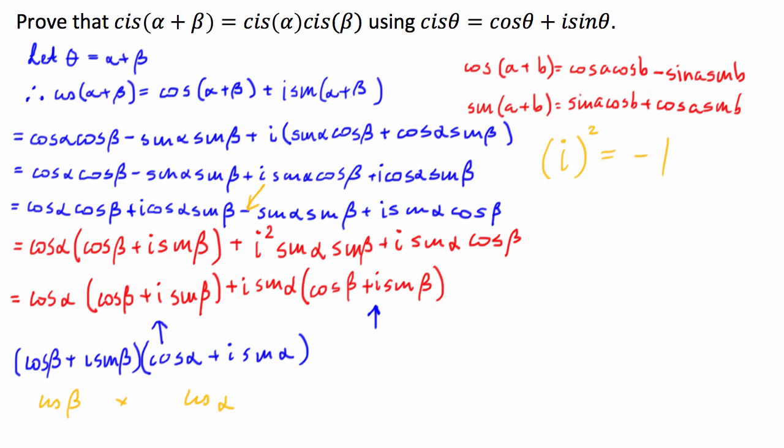We can make it look like the one in our question: this equals cis(α)·cis(β), which is equal to the right-hand side. So there you have it—there's our proof.